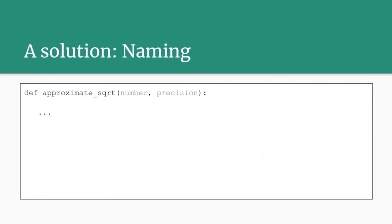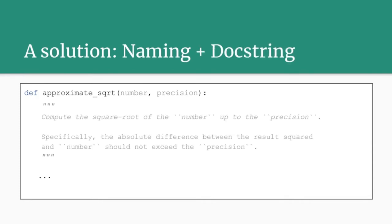You can add proper naming — instead of 'do_something', we call our function 'approximate_sqrt' and name the arguments: 'number' and 'precision'. For many of you this is probably already clear what the function does. We can also add a doc string with human-readable text describing what the function does, and specify details — for example, that the number and result are related in terms of the absolute difference.